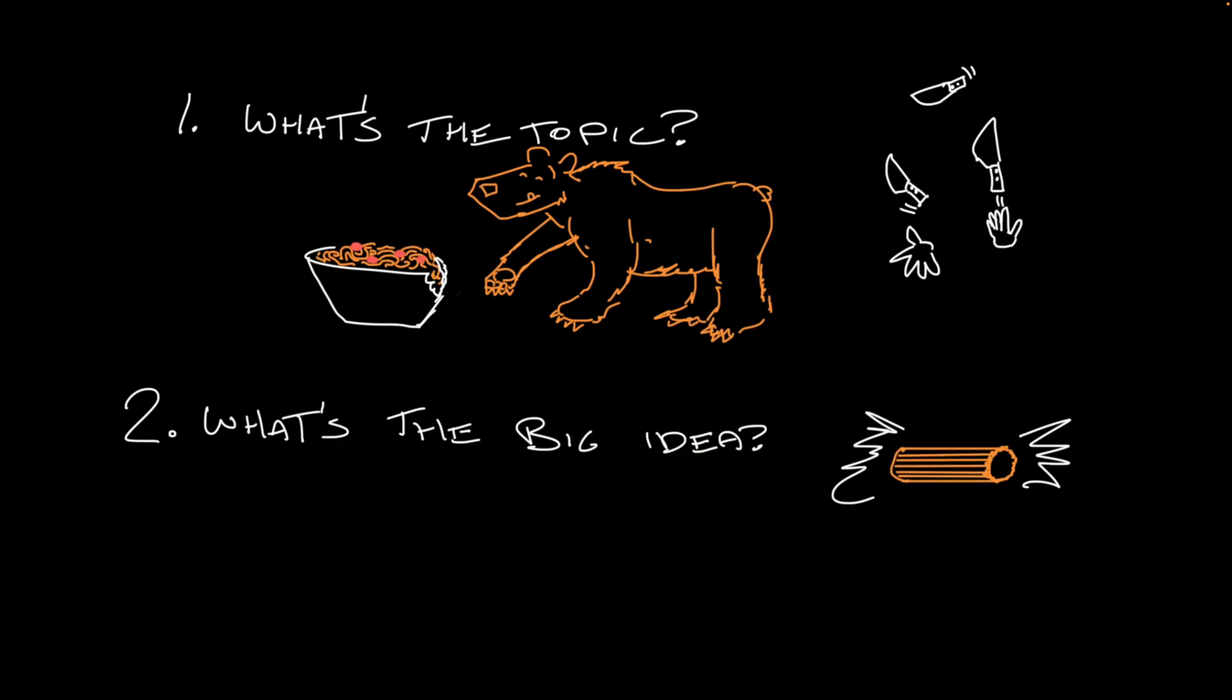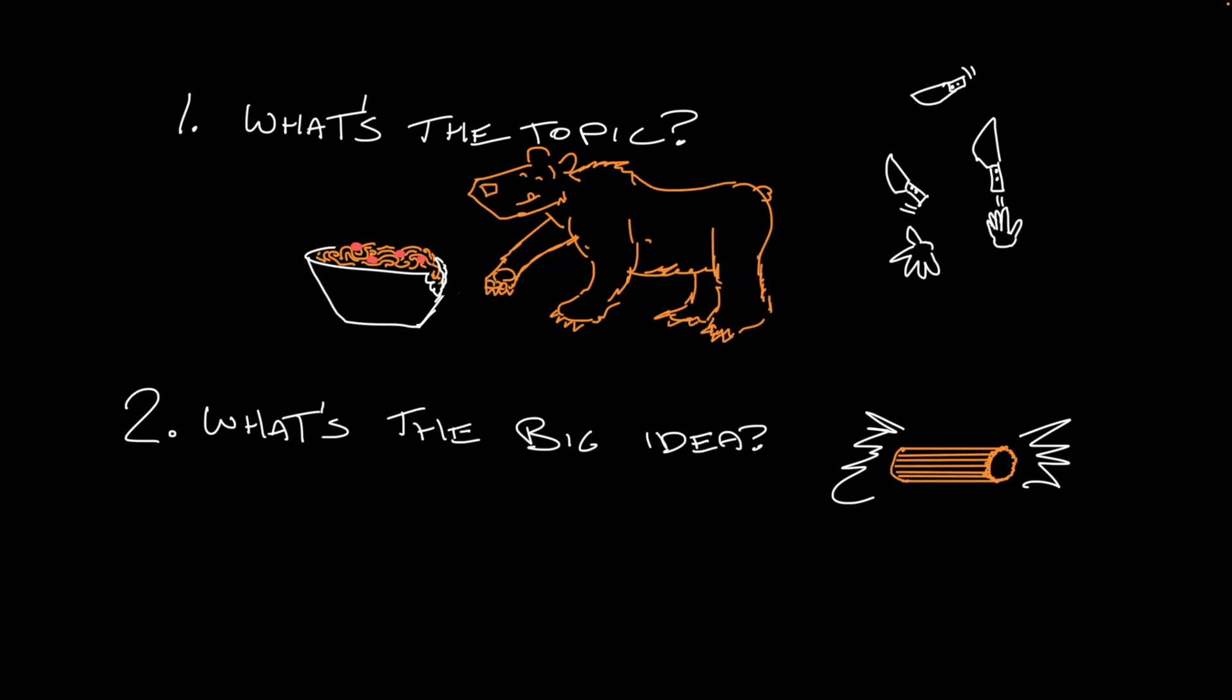Let's take a look at this passage and see if it's got more than one main idea in it. Macaroni is made in factories. Round noodles like macaroni are made with a special kind of flour, and the pasta dough gets extruded, that is, pushed, through a big machine that makes hundreds of pounds of pasta each day.